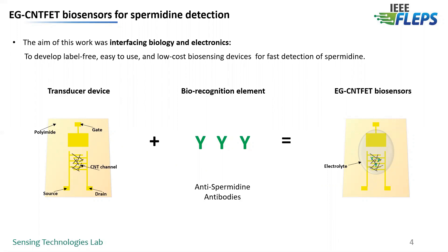Here, we propose a combination of a transducer device with a biorecognition element, such as anti-spermidine antibodies, to achieve selective detection towards spermidine in order to develop an electrolyte-gated carbon nanotube field-effect biosensor. In the next slide, I will present to you the fabrication of our devices.